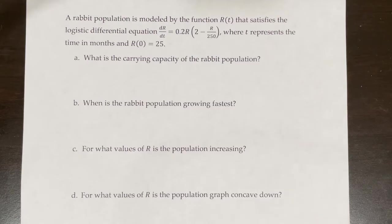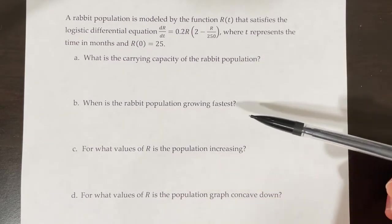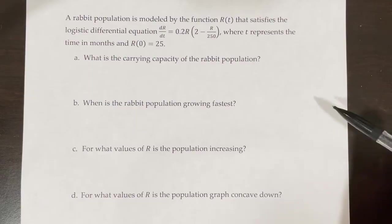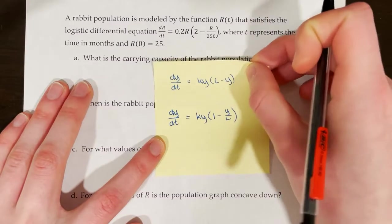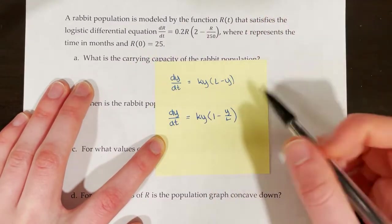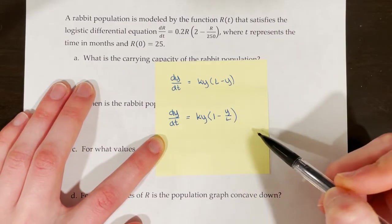Next problem: A rabbit population is modeled by dr/dt equals 0.2r times (2 minus r over 250), where t is in months and r(0) equals 25. The problem asks about carrying capacity, when it grows fastest, when the population is increasing, and when the graph is concave down. But we can't answer those until we rewrite the differential equation in one of our two standard formats.